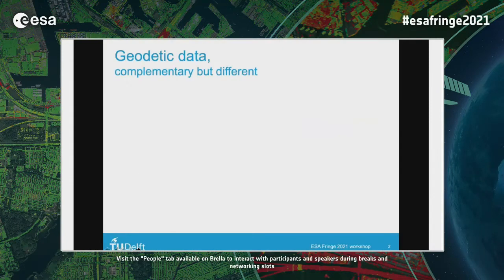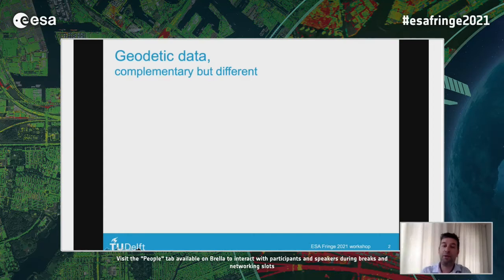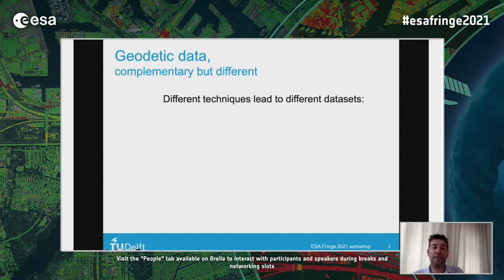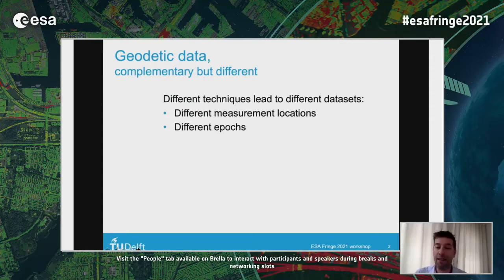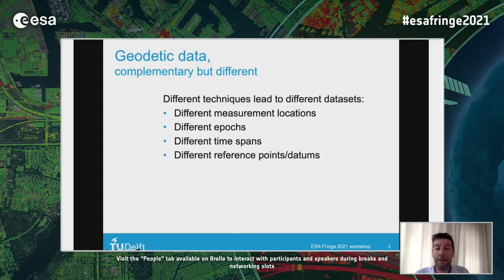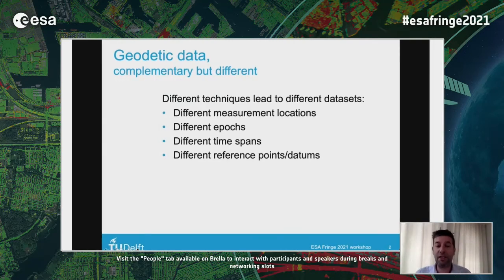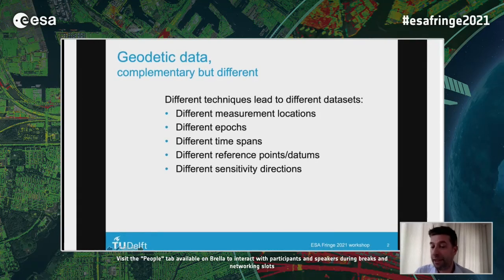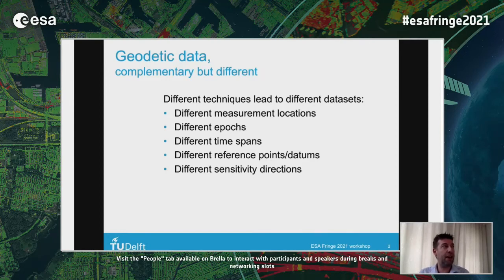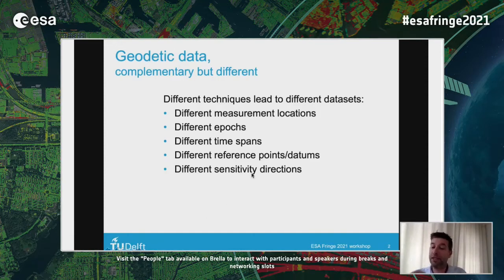As a recap: why is this a problem? Basically because geodetic data are complementary but certainly also different. Measurements are typically taken at different locations and different epochs, with different reference points or geodetic datums and reference systems. There are differences in sensitivity direction — with leveling you measure height differences in the up-down direction, with GPS you measure three-dimensional positions, and with InSAR we measure in the radar line of sight, a three-dimensional vector of sensitivity.